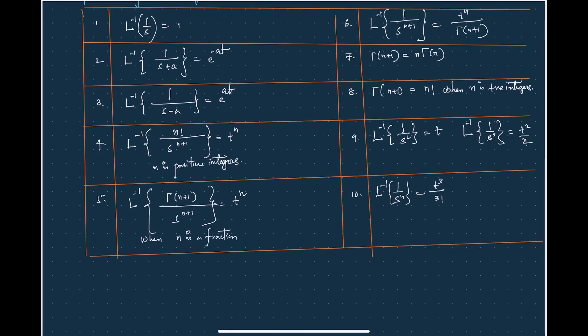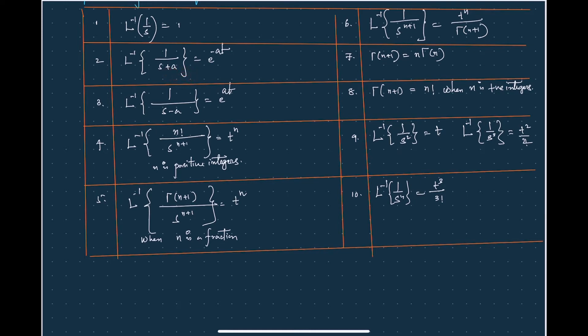Here are some formulas you need to remember. The inverse Laplace of 1/s is equal to 1. The inverse Laplace of 1/(s+a) is equal to e to the power minus at. This is because the Laplace transformation of e^(at) is 1/(s−a), so with minus a substituted, we get 1/(s+a) corresponding to e^(−at).